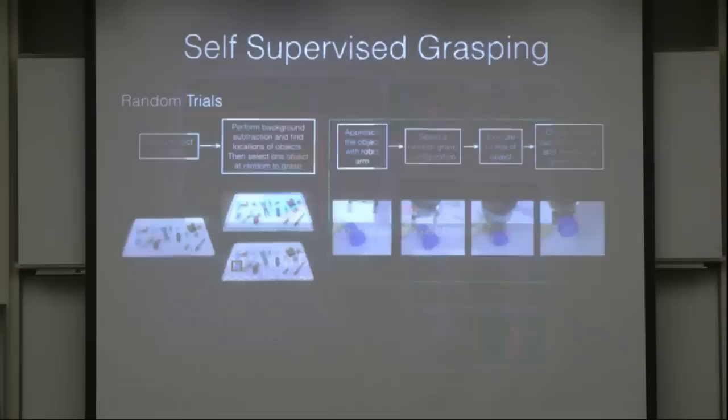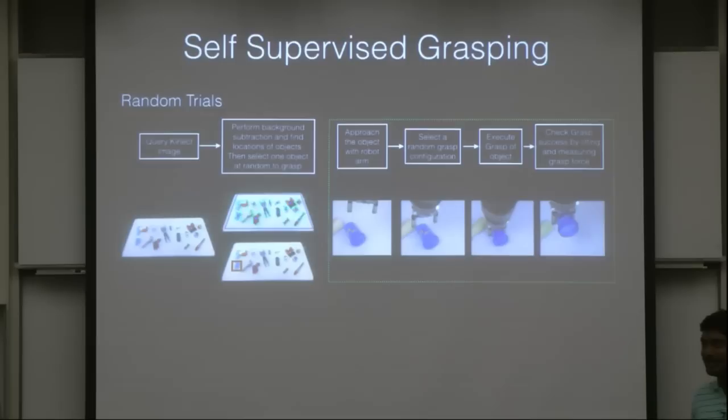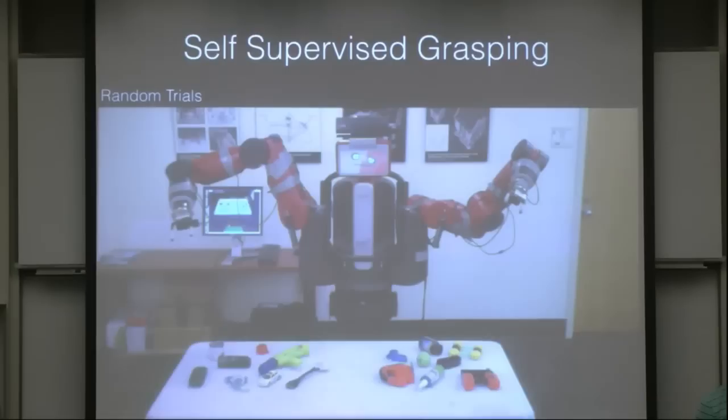So what do we do? We propose a self-supervised framework where the robot senses the table, chooses an object to grasp randomly, and then performs a random grasp on this object. We do this for around 40,000 trials.